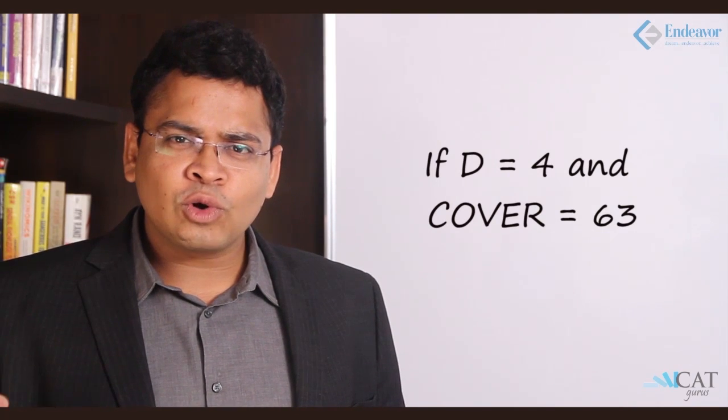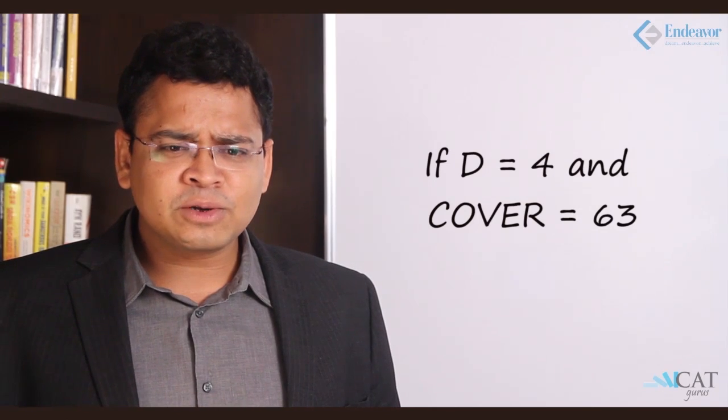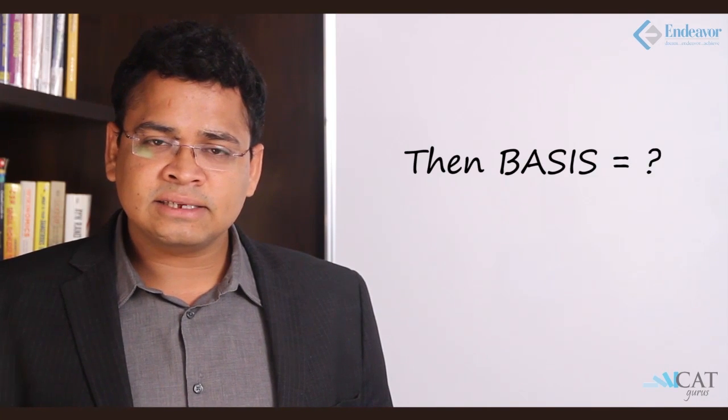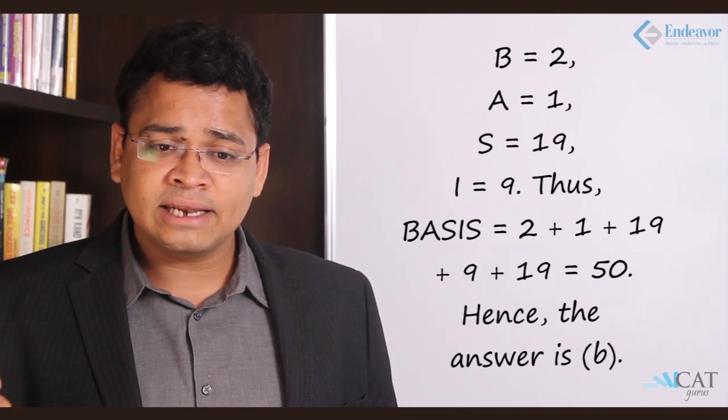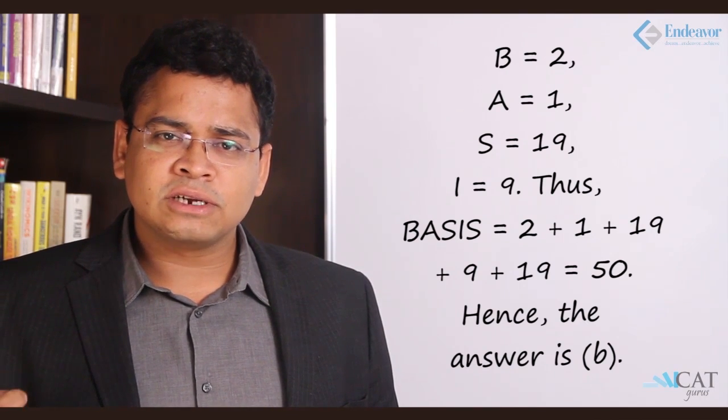When there's a trick involved in number coding: if D equals 4 and COVER equals 63, the logic is that each letter's alphabetical position is used. C is 3, O is 15, V is 22, E is 5, R is 18 — these sum to 63. Applying the same logic to BASIS: B is 2, A is 1, S is 19, I is 9, S is 19 — these add up to 50, which is option B.